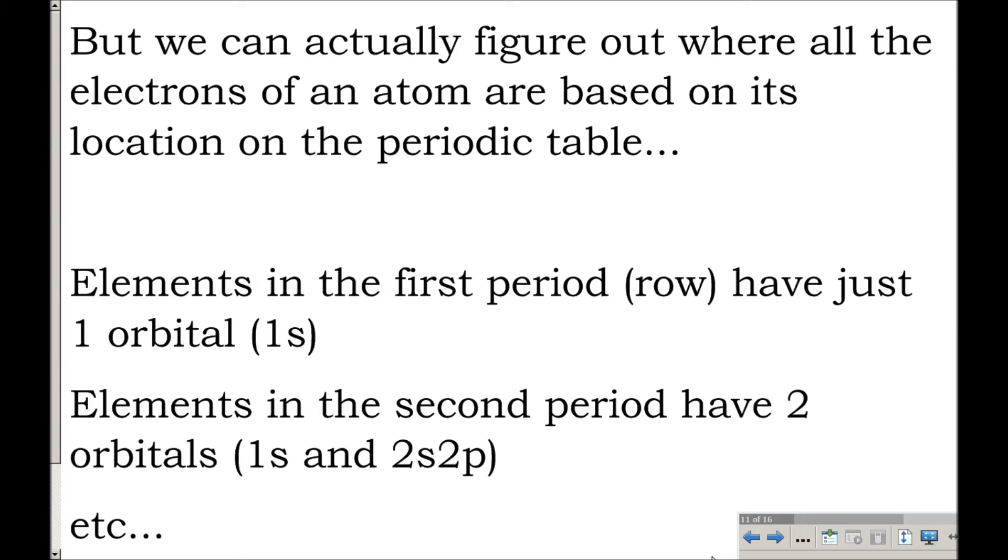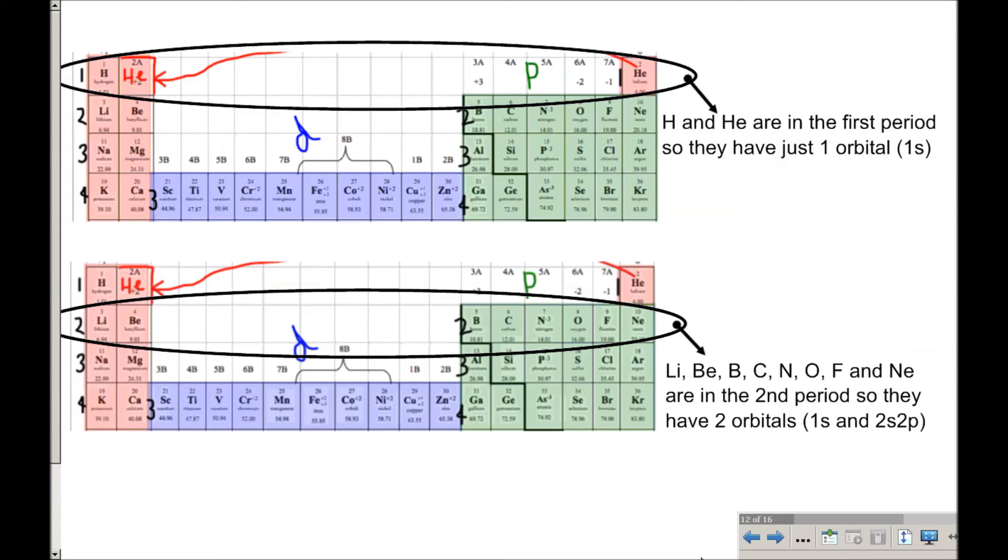So we can actually figure out where all the electrons of an atom are, not just its valence electrons, based on its location on the periodic table. So I want to remind you of something we talked about early on in this class, which is right here. Elements in the first period, the sort of horizontal back and forth row, have just one orbital, just one shell around their nucleus. It's the 1S suborbital, actually. And elements in the second period have two orbitals, meaning two shells around their nucleus. So the first shell is the 1S suborbital, and the second shell actually has the 2S suborbital and the 2P suborbital in it. So what that means is, if you look up here, hydrogen and helium are the only two elements in the first period. So they have just one orbital, one shell around their nucleus.